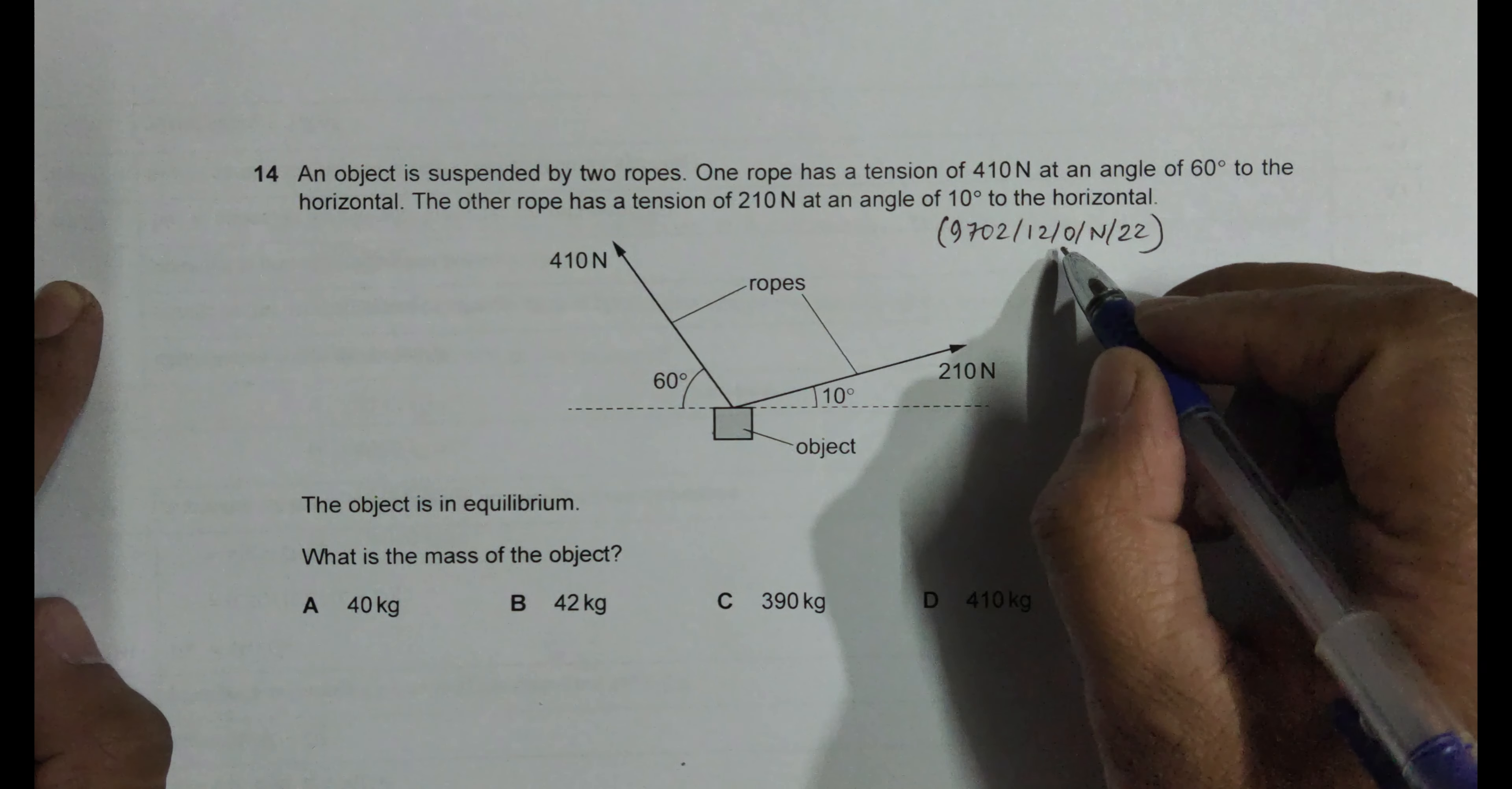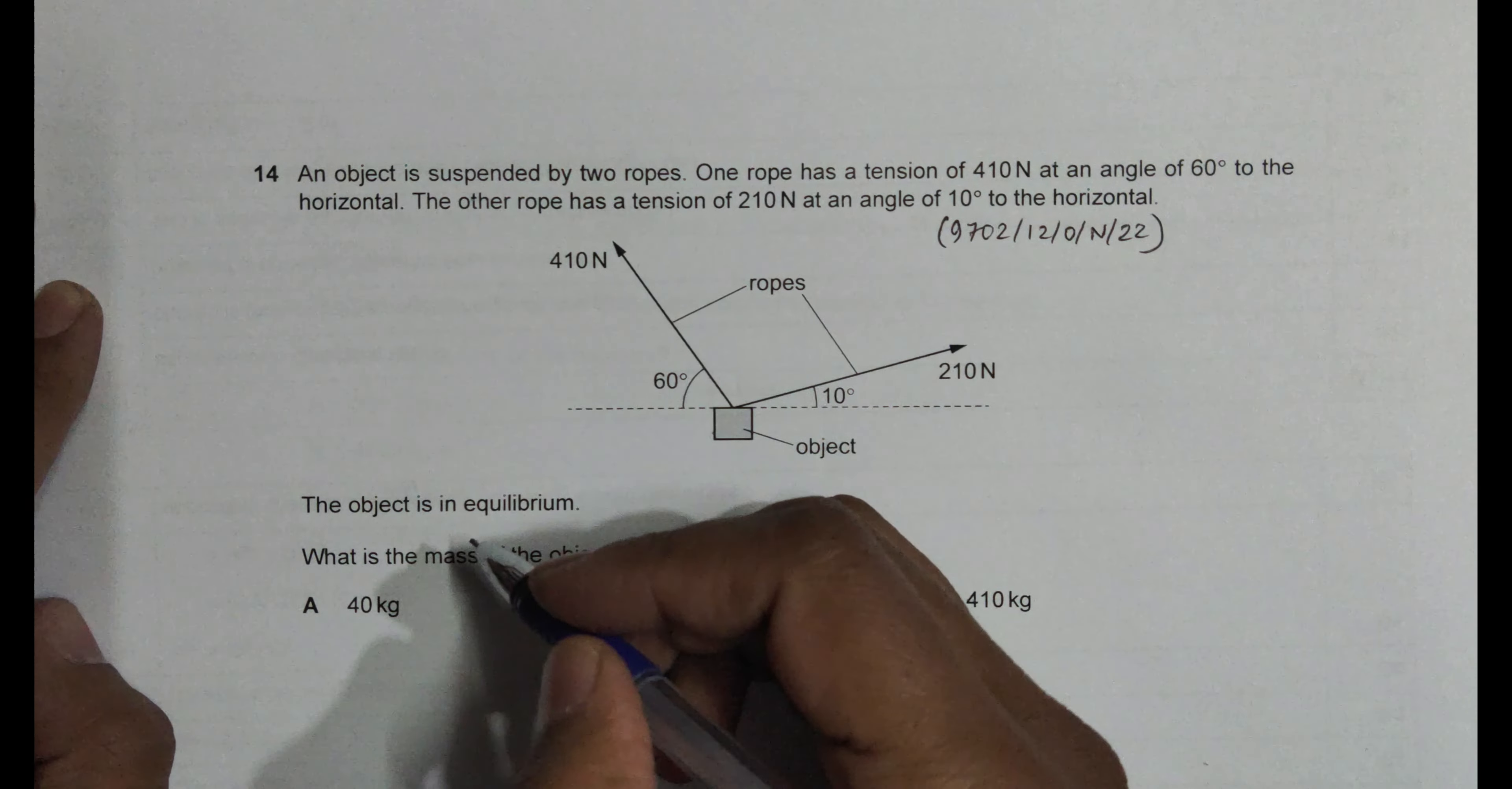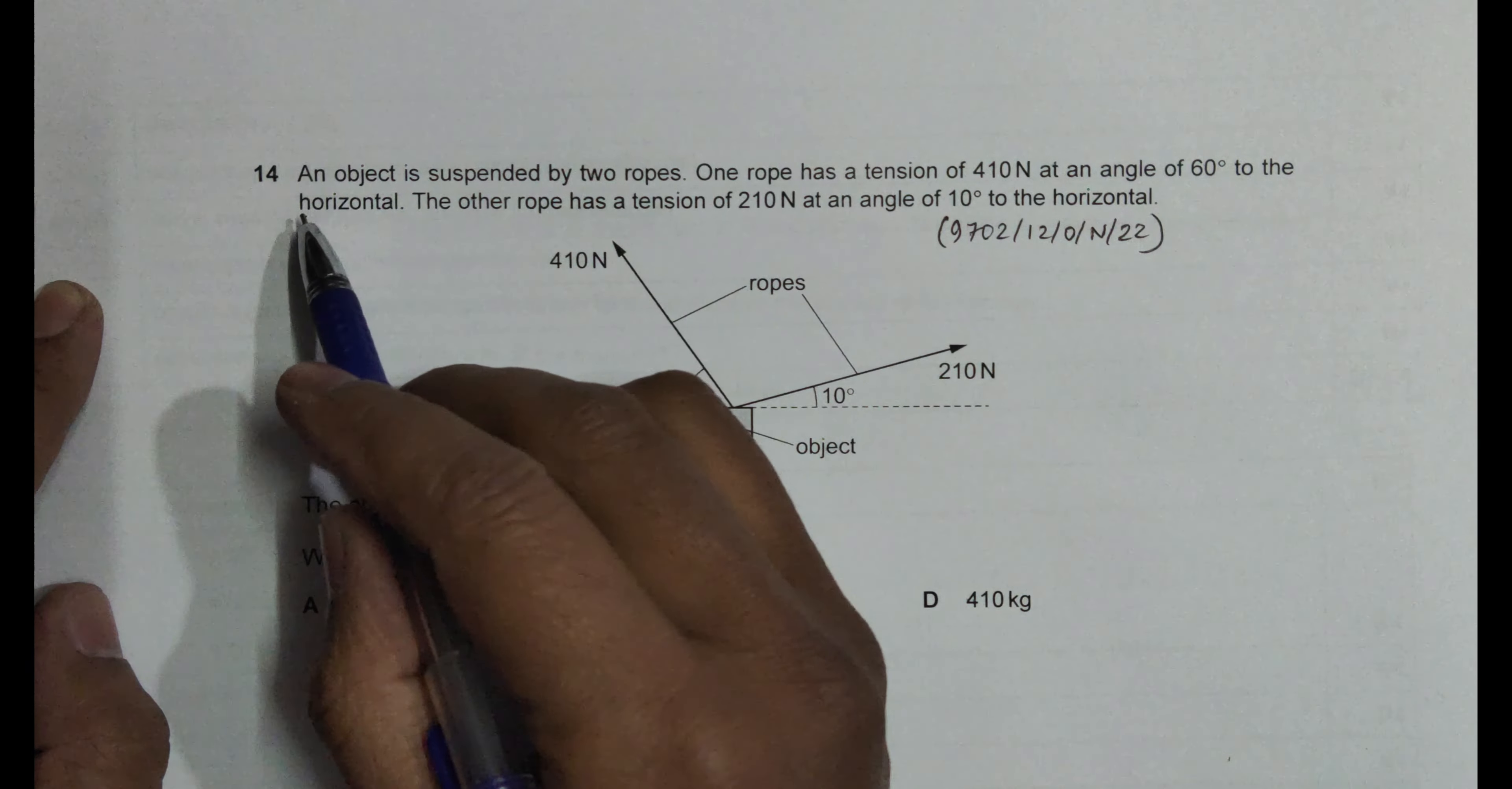Hello folks, this is your 2022 October-November Paper 1-2, and the question number is 14. This question is concerned with the chapter vectors, or I can say forces, and it's concerned with equilibrium.